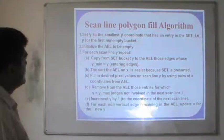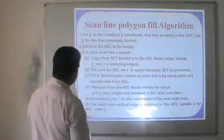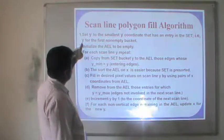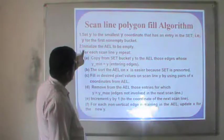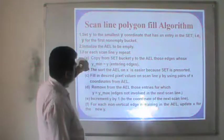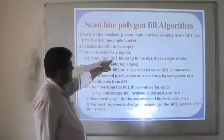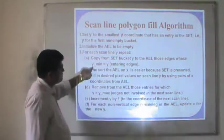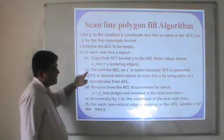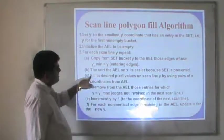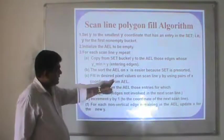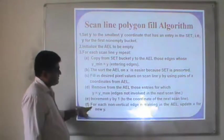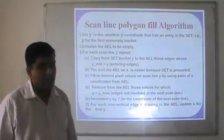Now we have the scanline polygon fill algorithm combined together. Set y to the smallest y coordinate having a non-empty bucket. Initialize the active edge list (AEL) to empty. For each scanline y, repeat: copy from the sorted edge table (SET) bucket y to the AEL where y_minimum equals y (entering edges), sort the AEL on x, fill in the desired pixels, and remove AEL entries where y equals y_max. Update x for each remaining non-vertical edge in the AEL.